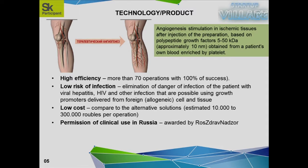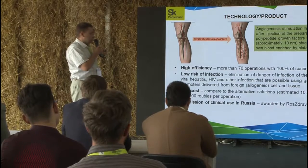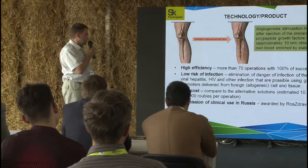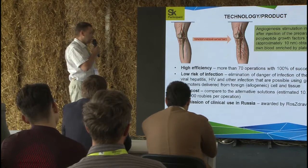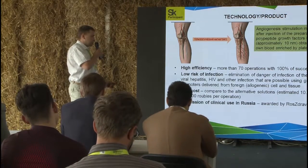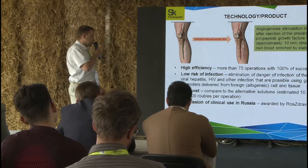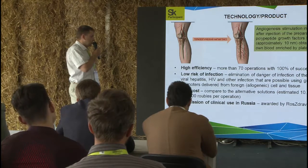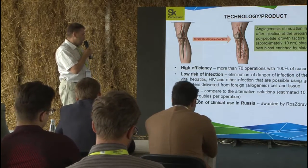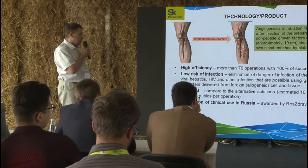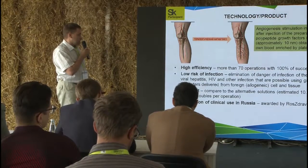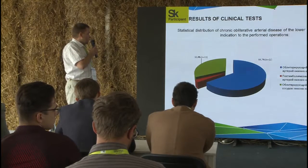Limb ischemia is really very expensive. Our technology consists of two parts. We have an angiogenesis stimulation in ischemic tissues after injection of a preparation based on polypeptide growth factors obtained from a patient's own blood enriched by platelet. We have already had 70 operations. We get cells from the patient and it's very safe — no hepatitis or HIV infection possible — and the cost is very low compared to competition. Our company has allowed our technology to be used in clinical practice in Russia.